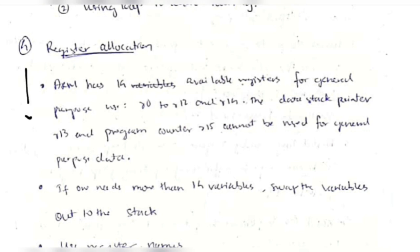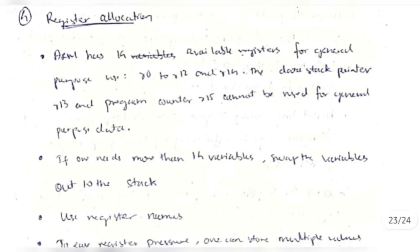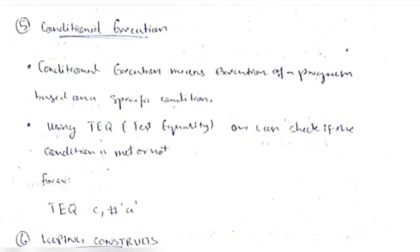Register allocation: registers r0 to r12 and r14 can be used for general-purpose value allocation. Registers r13 (stack pointer) and r15 (PC) are reserved for system use and are not for general use. Tips for writing efficient assembly code include using register name aliases to improve readability and storing multiple values in the same register to reduce register pressure.